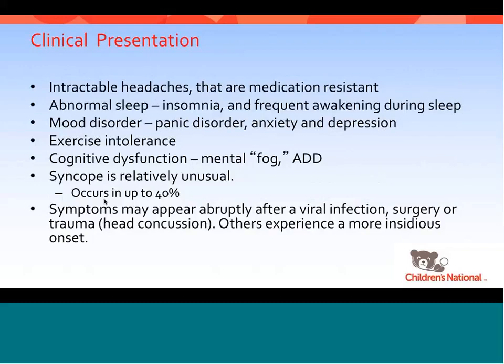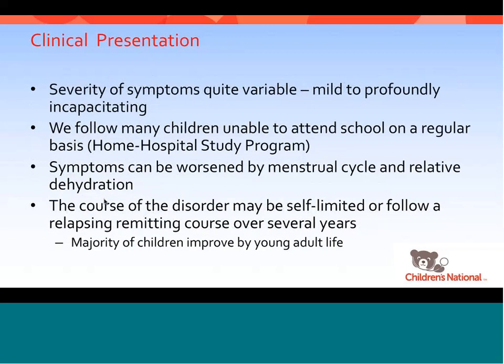Syncope is relatively unusual but can occur in up to about 40% of patients. Symptoms may appear abruptly after a viral infection, surgery, vaccinations, or head trauma such as a concussion. Others experience a more insidious onset. The severity of symptoms can be quite variable, from very mild to profoundly incapacitating — many children are unable to attend school regularly and are forced onto home hospital study programs. Symptoms may be worsened by menstrual cycle and relative dehydration. The course may be self-limiting or follow a relapsing-remitting course over several years, and the majority of children actually improve by their young adult life.